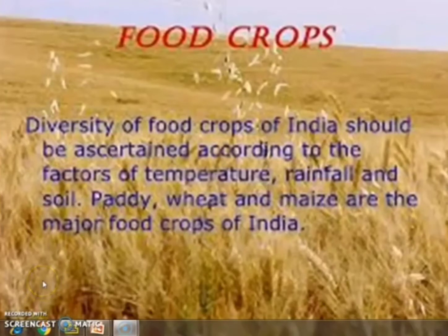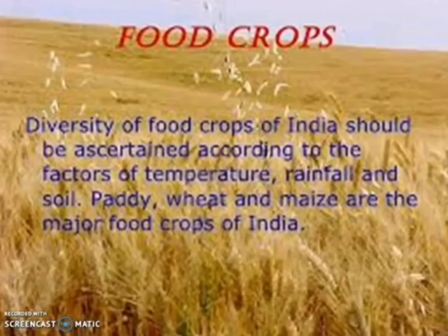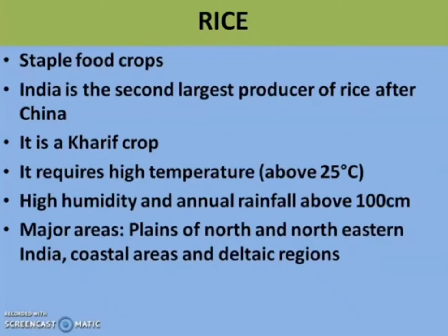The diversity of food crops of India should be ascertained according to the factors of temperature, rainfall and soil. Paddy, wheat and maize are the major food crops of India. Moving to the first food crop, that is paddy or rice. It is the staple food crop of the majority of the people in India. After China, India is the largest producer of rice. It is a Kharif crop.